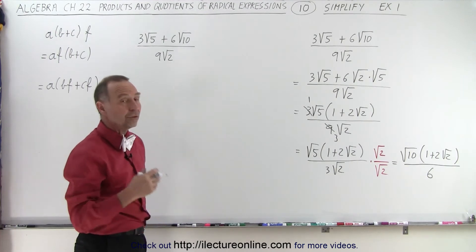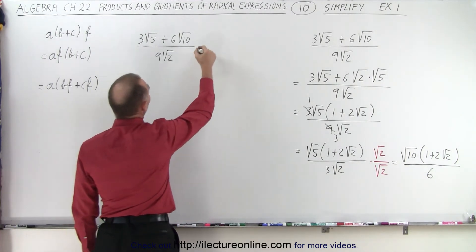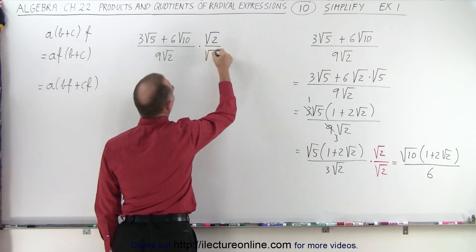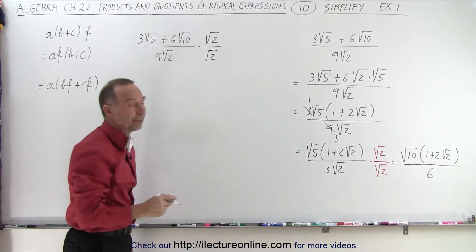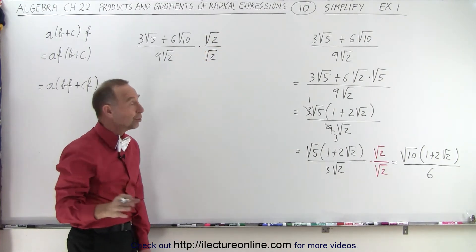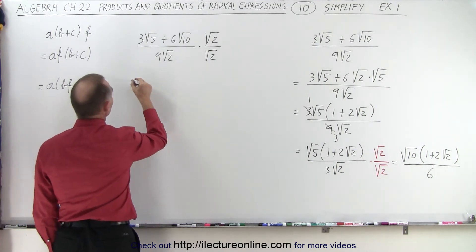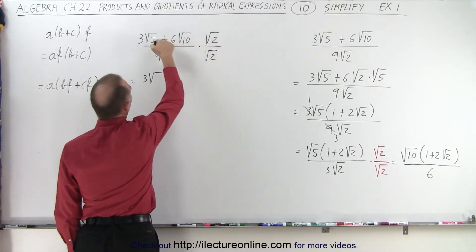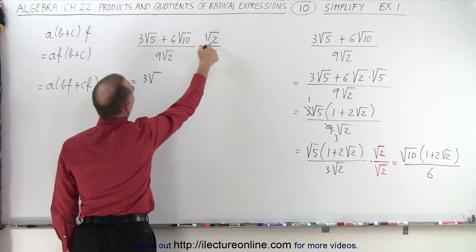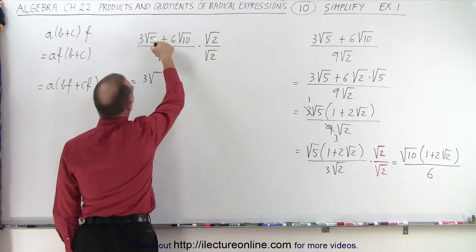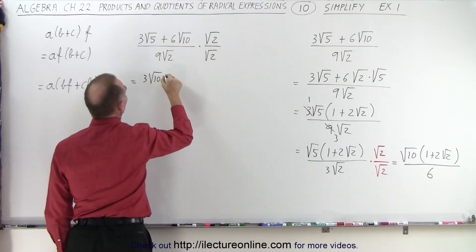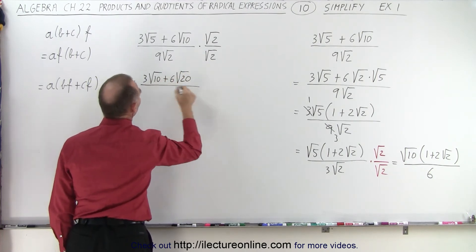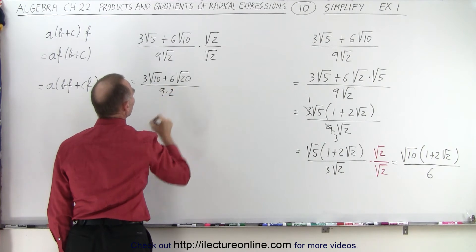Now we'll do the same problem, but here we're going to right away multiply both the numerator and denominator by the square root of 2 in order to rationalize the denominator. When we do that, this is equal to 3 times — here we have to multiply the square root of 2 by both terms — so this gives us 3 times the square root of 10, plus 6 times the square root of 20, all divided by 9 times 2.